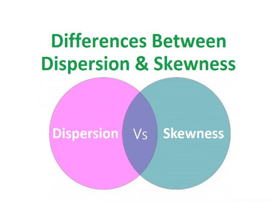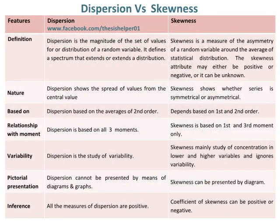Differences between dispersion and skewness. Dispersion is the magnitude of the set of values for, or distribution of, a random variable. It defines a spectrum that extends or spreads a distribution.